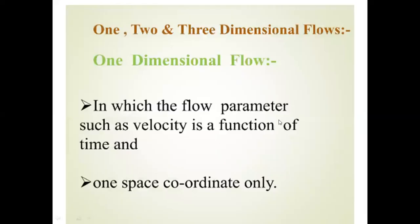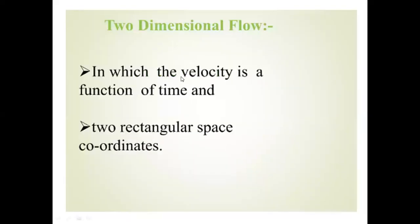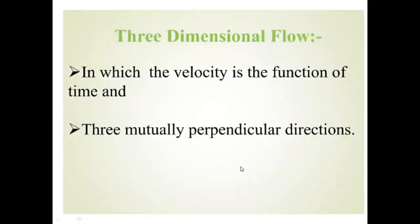The last type is one, two, and three dimensional flow. One-dimensional flow means the flow parameters like velocity are a function of time and take place in only one axis. Two-dimensional velocity is a function of time related to a rectangular space coordinate. In three-dimensional flow, we have three mutually directional conditions — one direction, two-directional flow, and three-directional flow. There are six different types of flows available in total.